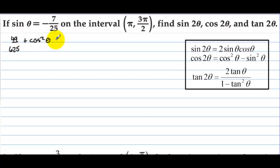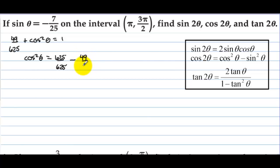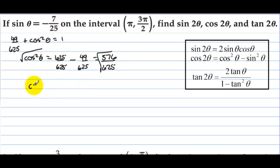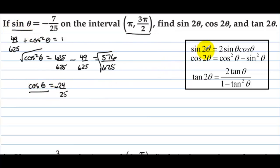Using the Pythagorean identity: sine squared plus cosine squared equals 1, cosine squared theta equals 625/625 minus 49/625, which equals 576/625. Taking the square root, cosine equals 24/25, but it must be negative because we are in the third quadrant. Now we have both sine and cosine, so we can find sine, cosine, and tangent of twice the angle.